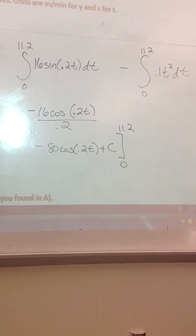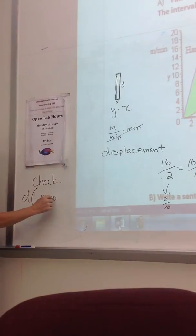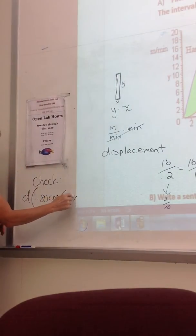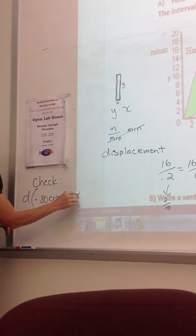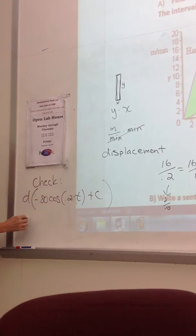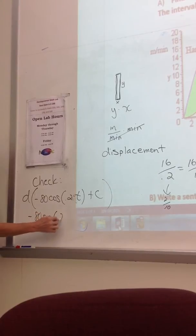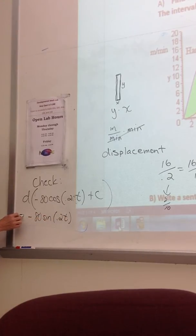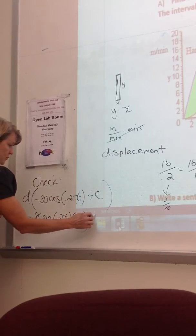Again, checking my antiderivative before I go much further. The derivative of what I think is the antiderivative needs to equal what I started with. So negative 80 times sine of 0.2T times another negative and then times 0.2.